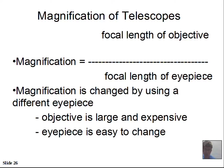Astronomers do not change the objective to get a different magnification. The objective is the most expensive part of the telescope — this large light-gathering element — and it's anchored solidly into the tube. Eyepieces are less expensive and easy to pull out and replace. So we easily change eyepieces to change magnification: focal length of the objective divided by focal length of the eyepiece produces the magnification.